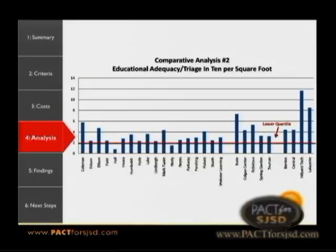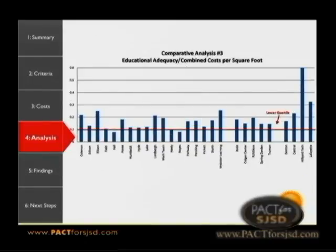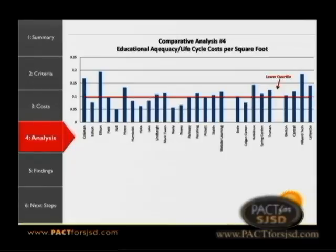The next chart compares triage in ten dollars per square foot. You can see a couple of schools fall in the lowest quartile, where they don't offer as much value after spending those dollars. The third chart uses combined costs — taking elementary schools to a 550 number and middle schools to a 550 number — and again a couple of schools don't offer quite the promise using that scope of work. Finally, lifecycle costs show a few schools falling below the lowest quartile.